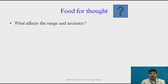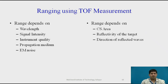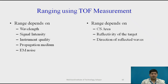Continuing with ranging using time of flight measurement — what does the range depend upon? One is obviously the wavelength used. Another, by simple logic, is signal intensity. Third is instrument quality, resolution of the instrument, and the signal processing capability. The propagation medium is also a factor, and lastly electromagnetic noise. These factors significantly affect the range at which an object can be detected.